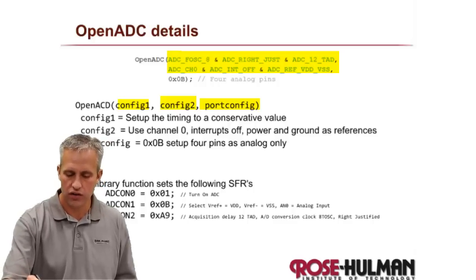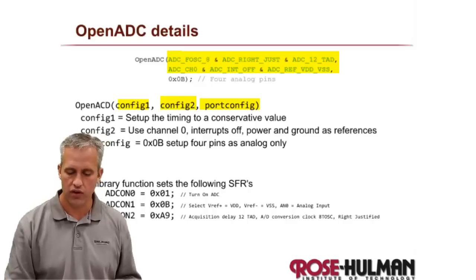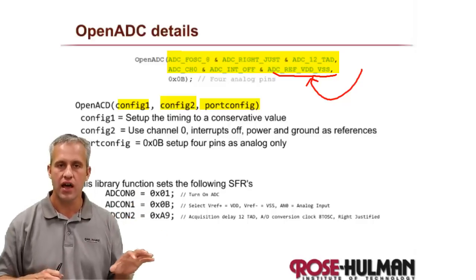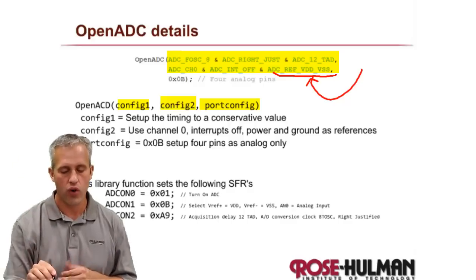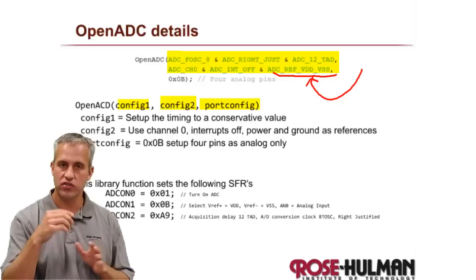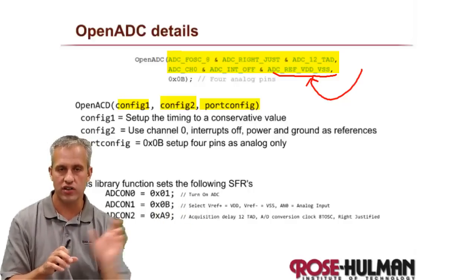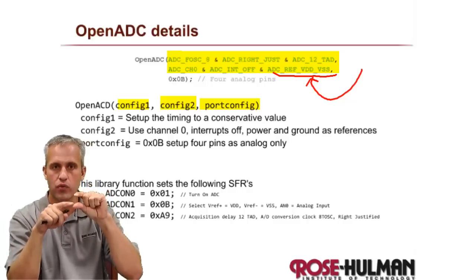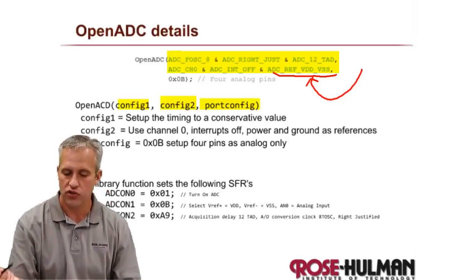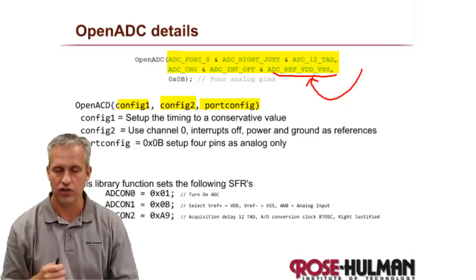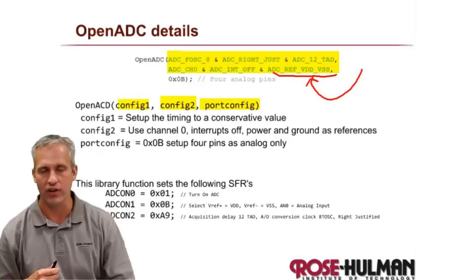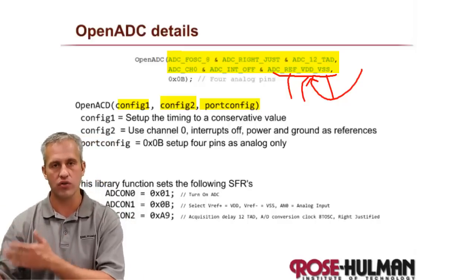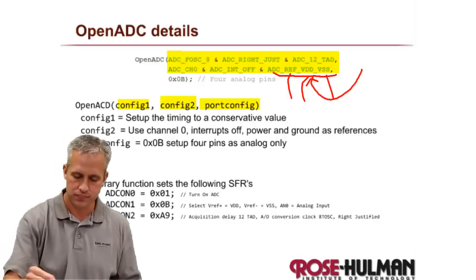There are some things in there about how many bits you want, whether you want interrupts or not. There's also a setting for what you want zero to be and what you want 1023 to be. You could make a voltage divider circuit where zero is two volts and 1023 is three volts to improve resolution between those extremes. Typically though, we just use VDD and VSS — so zero is zero volts and 1023 is five volts.